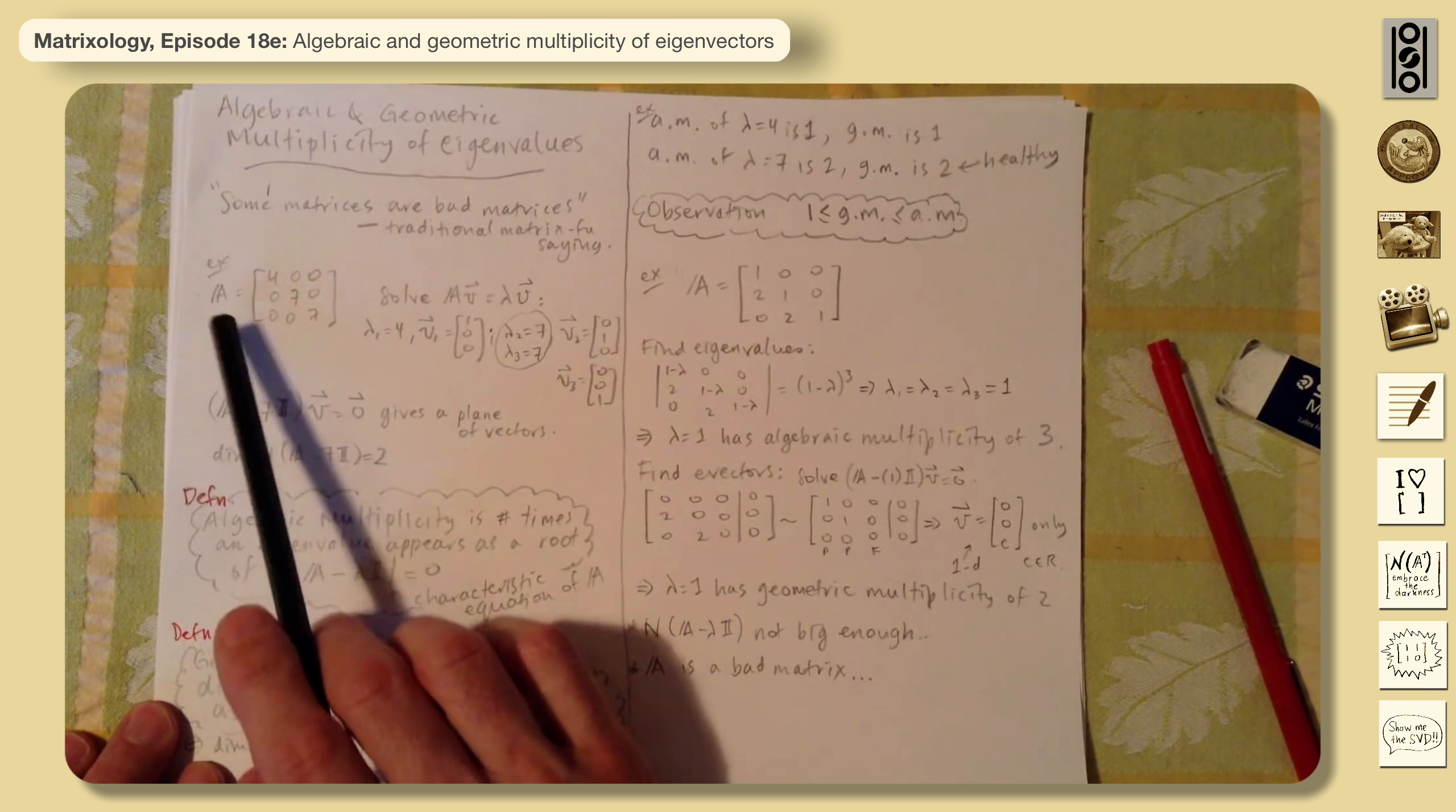A pretty straightforward observation is that geometric multiplicity has to be less than algebraic multiplicity. The space adds up. There are only n dimensions, so we can't overflow that. And it has to be at least one. There's at least one eigen direction associated with an eigenvalue.